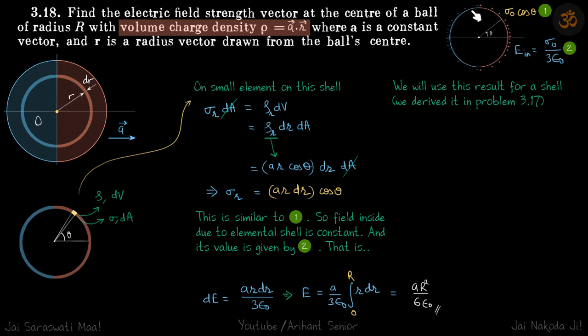So the result which we derived was if we have a shell with a charge distribution of sigma not cos theta, then the electric field inside comes to be constant and its value is sigma not by 3 epsilon.